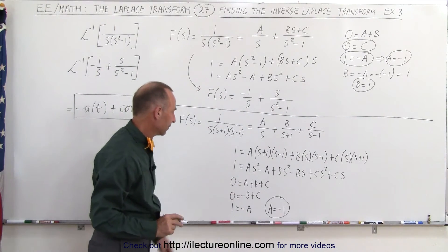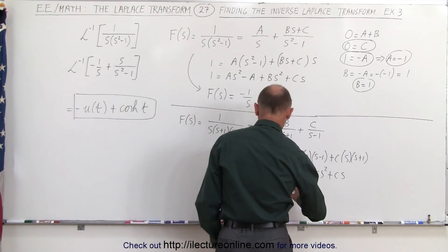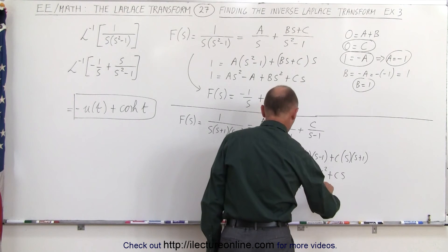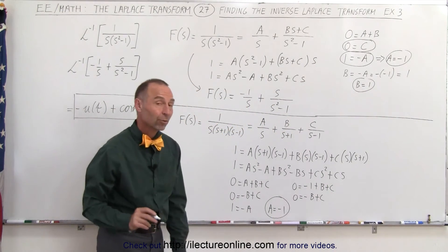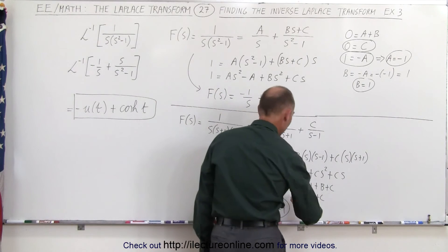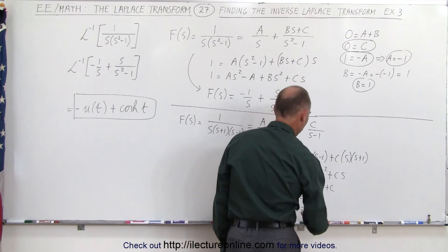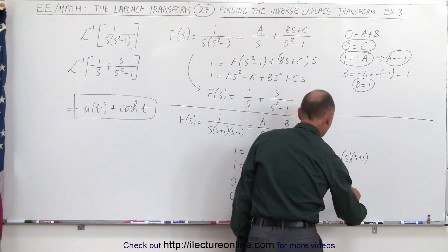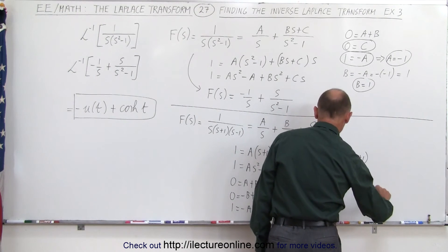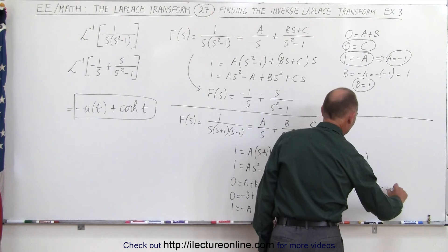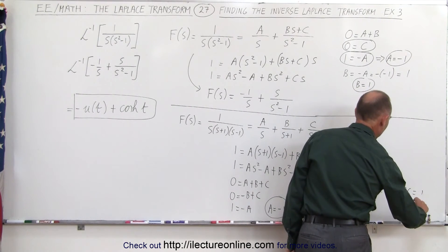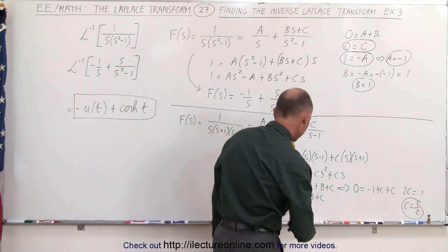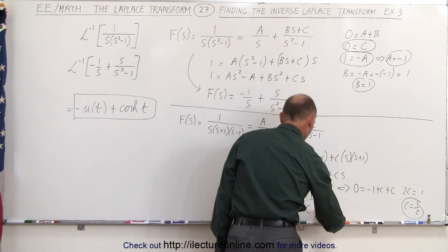Plugging a equals minus 1 into the s squared equation gives 0 equals minus 1 plus b plus c. From the s-term equation, 0 equals minus b plus c, so b equals c. Substituting into the first equation: 0 equals minus 1 plus c plus c, so 2c equals 1, meaning c equals one half. Since b equals c, b also equals one half.